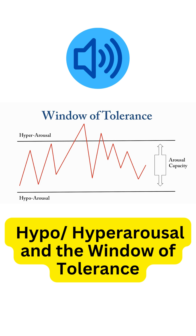So let's look at that in the context of the window of tolerance. Hyperarousal is on the top and hypoarousal is on the bottom of this image, and in between is the arousal capacity of the individual.